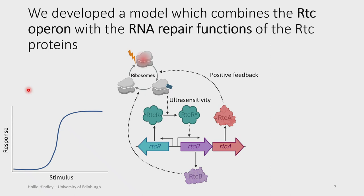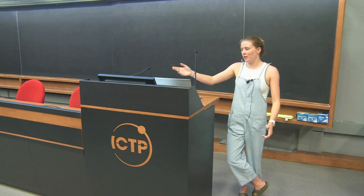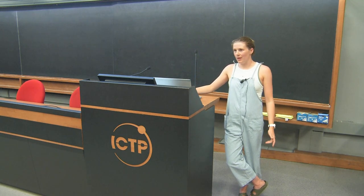So the next thing we did was a stability analysis. [Audience question: How does it get started? If you have 100% healthy ribosomes and you get one broken ribosome, how do you get the first tagged ribosome?] We've included a baseline expression of the RTC-A and RTC-B proteins, so you can get the first tagged ribosome. The tagged ribosome is the kickstarter of the activation of the whole system.